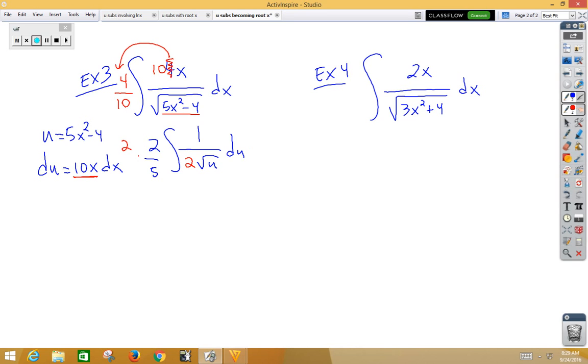I get 4 fifths root u plus c, but it's not really a 4 fifths root 5x squared minus 4 plus c.